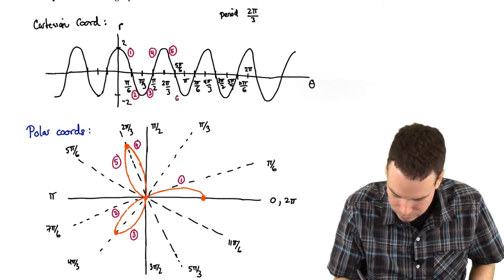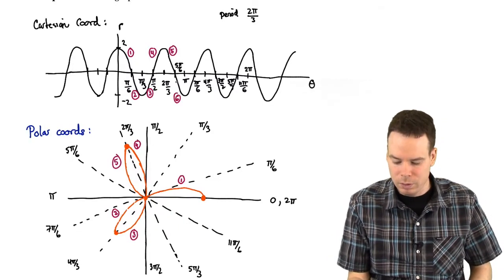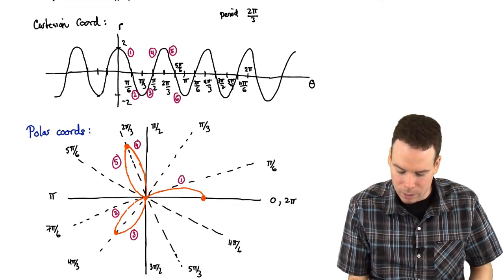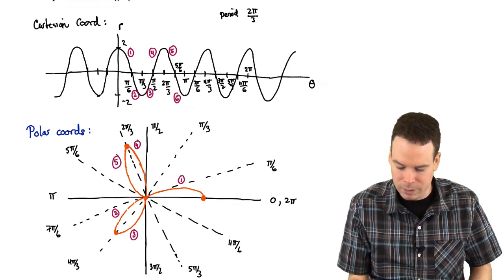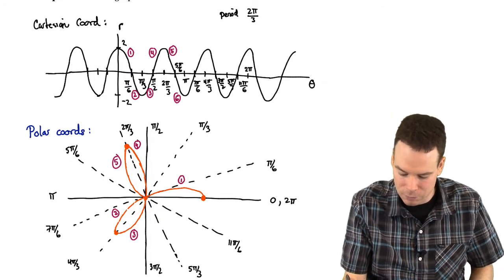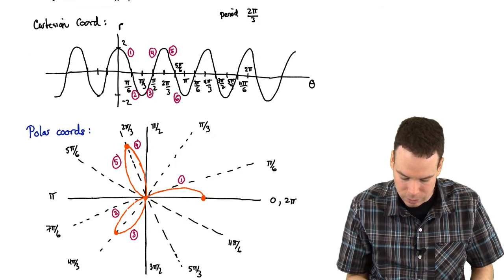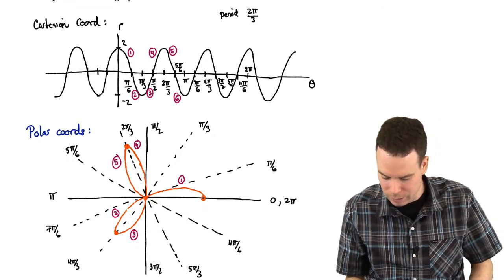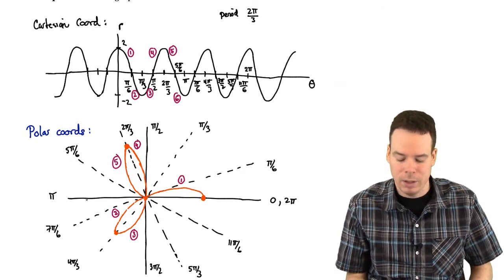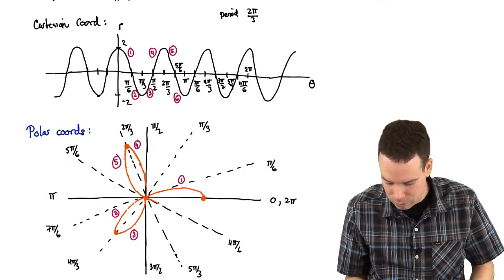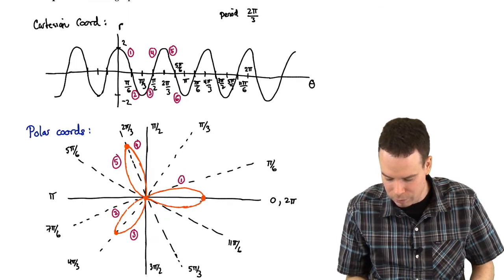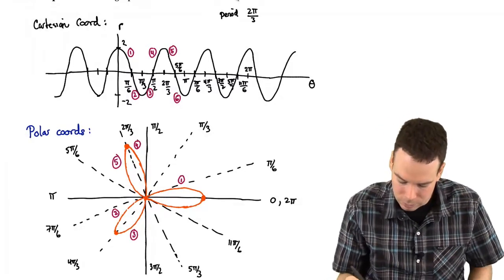What about segment number 6? Now we're moving out as we go through 5π by 6 to π. Our r values are negative, so we're on the opposite side of the pole. When we hit an angle of π, our r value is going to be negative 2. So it's not out here at 2, it's on the other side of the pole at negative 2. So as I move through the angles from 5π by 6 to π, my r value is on the opposite side of the pole, and my r value goes out to here. So that's 6.